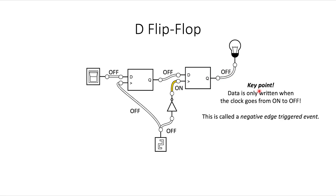The point is that the data is only written to the output when the clock goes from on to off. If you put this whole circuit in a box, from your perspective you would only see something change in the output when the clock goes from the on state to the off state. This is called a negative edge triggered event.